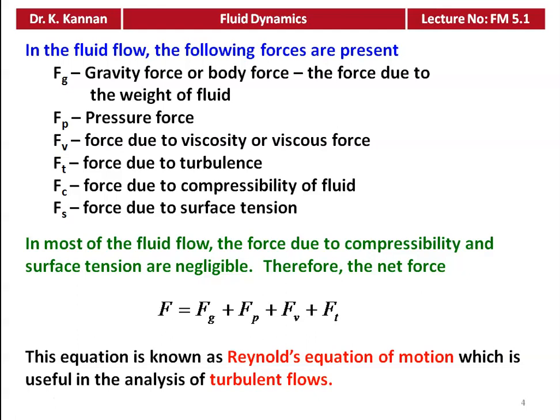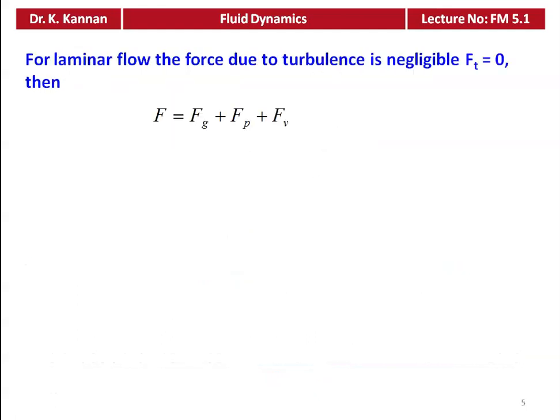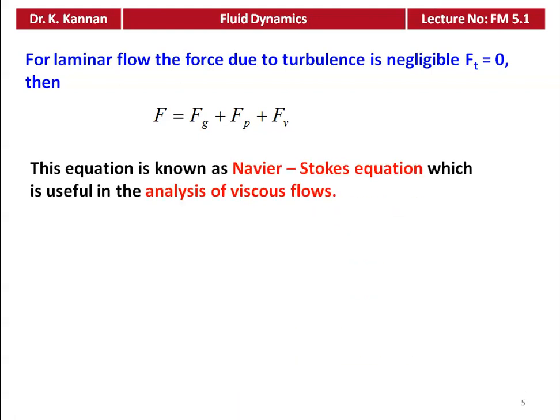We simplify one by one, taking the most simplified situation. For laminar flow, the force due to turbulence is negligible, Ft = 0. The equation then becomes: total force equals gravity force + pressure force + viscous force. This equation is called the Navier-Stokes equation, which is useful for analysis of viscous fluid flow. We will discuss viscous flow at a later stage.